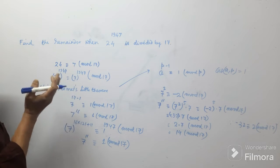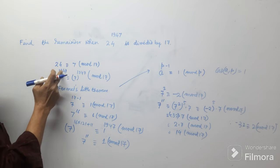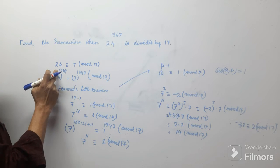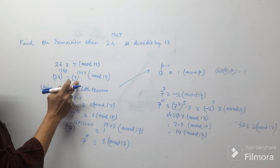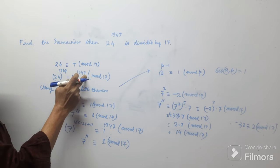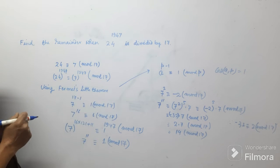Now it is a rule: raise the power of 24. I have raised it up to 1947, then the remainder's power will be 1947 mod 17.